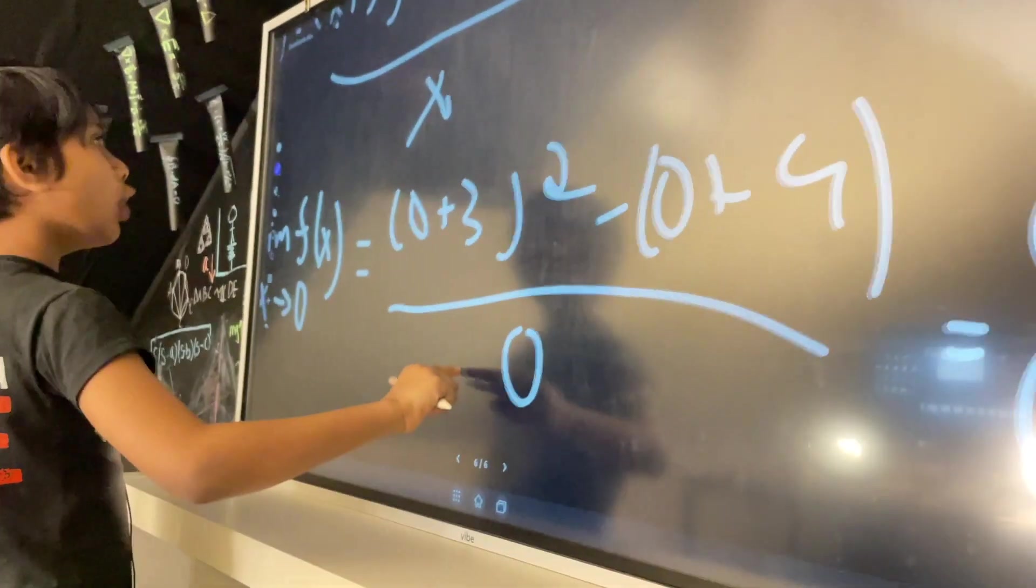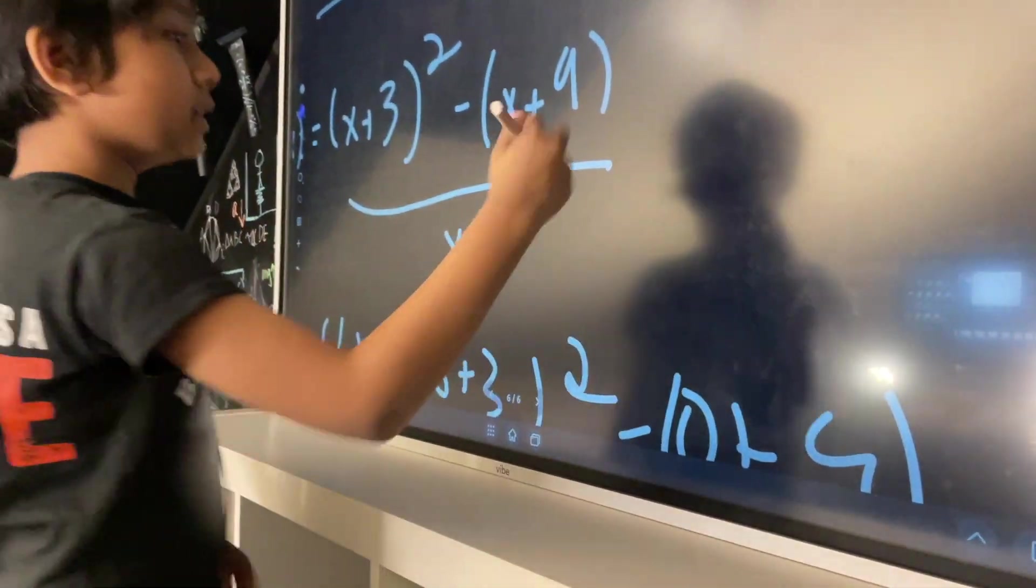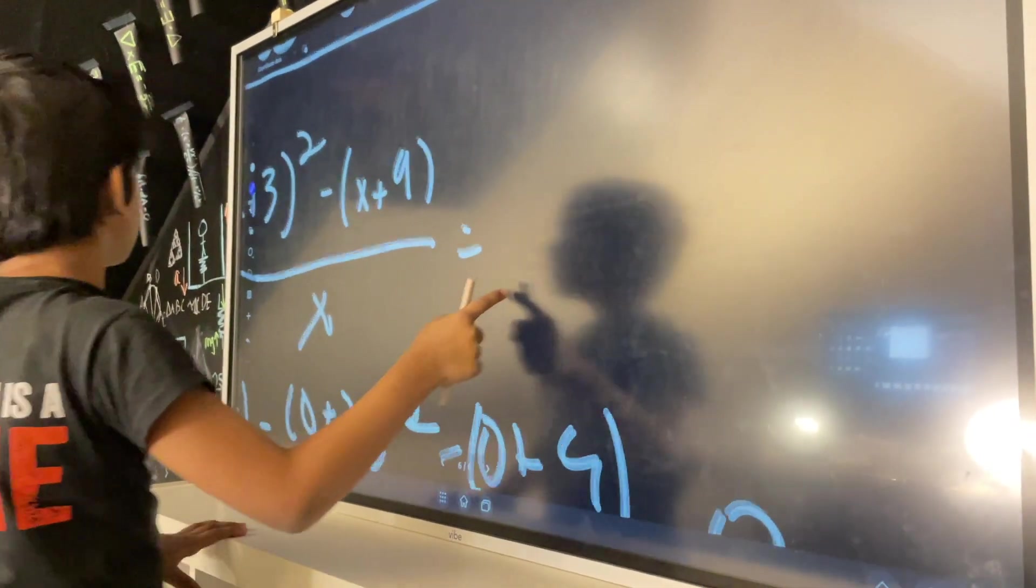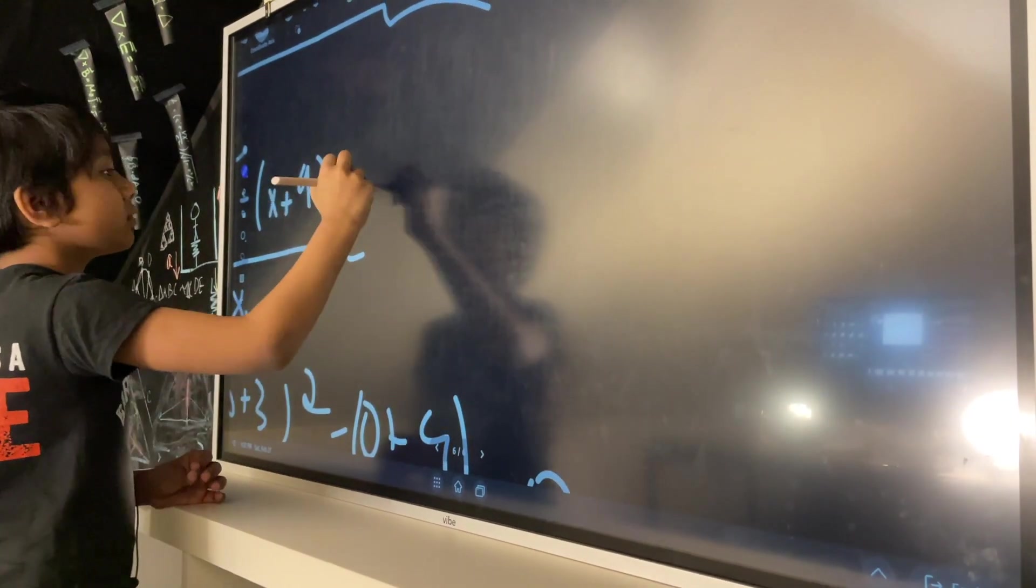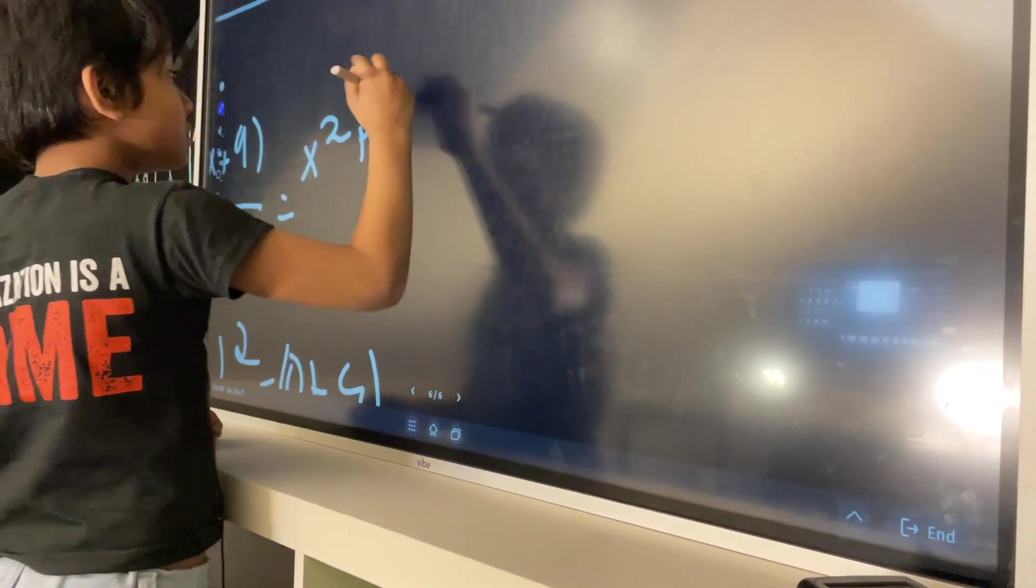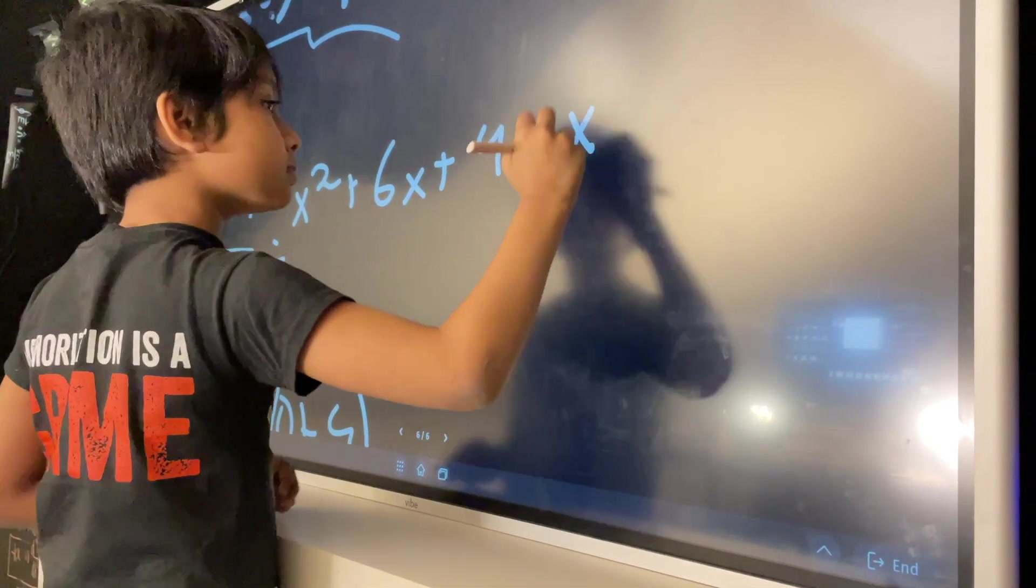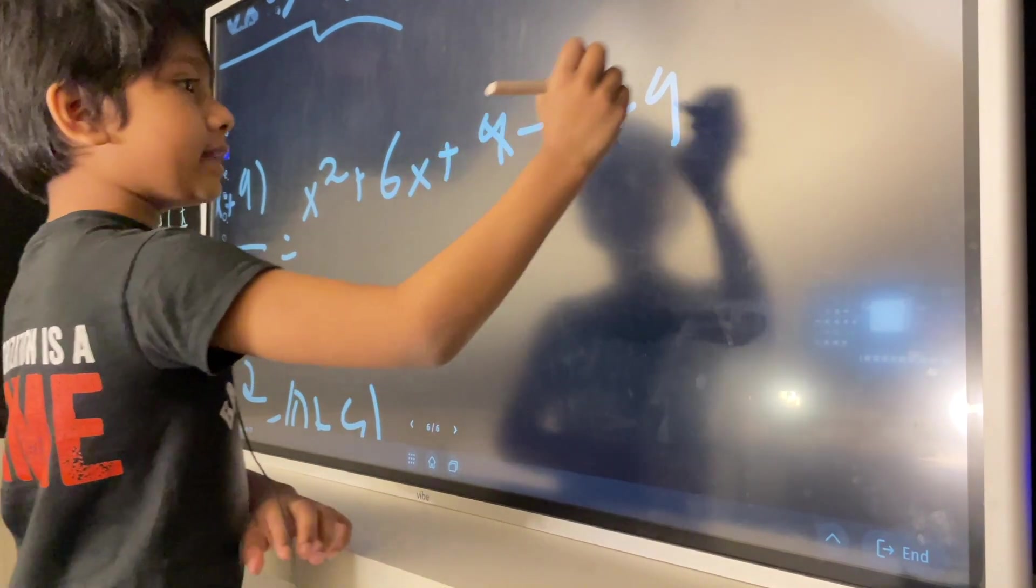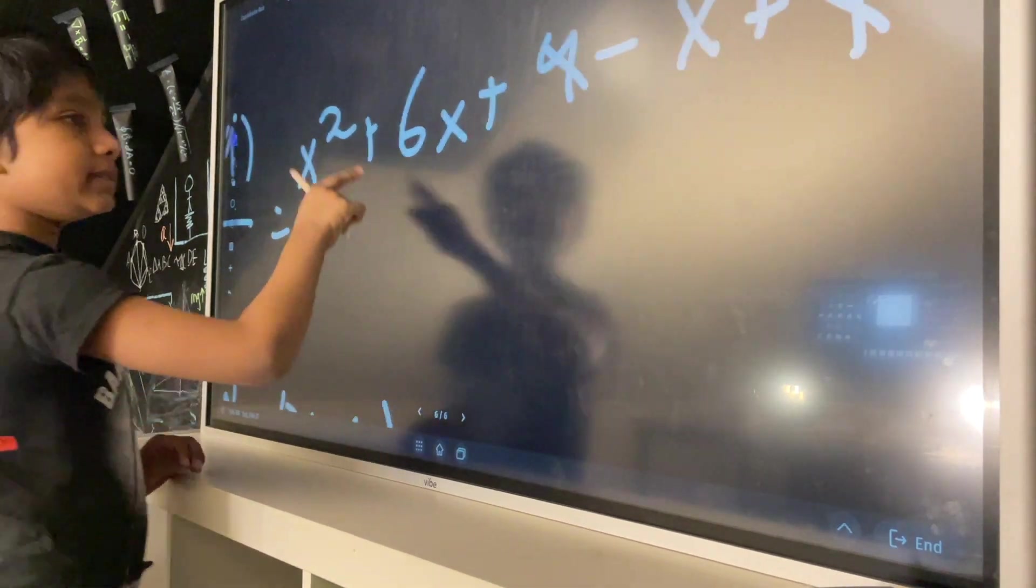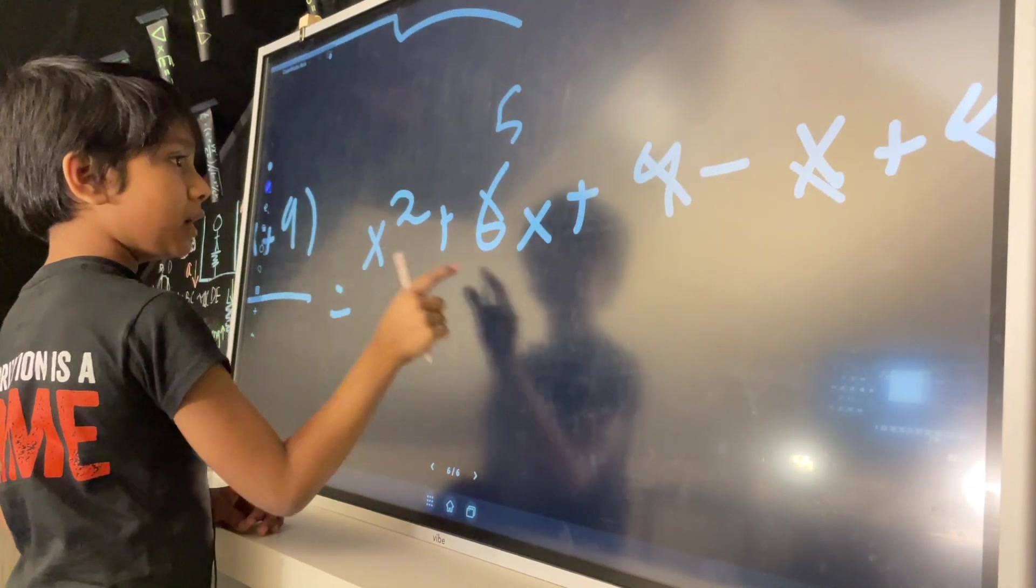But there is some hope here. Because what we can do is we can actually unsimplify this. We can elongate this. So, x plus 3 whole squared is x squared plus 6x plus 9 minus x plus 9. So, obviously these do cancel out, and then this gives you 5x, and you divide that by x.